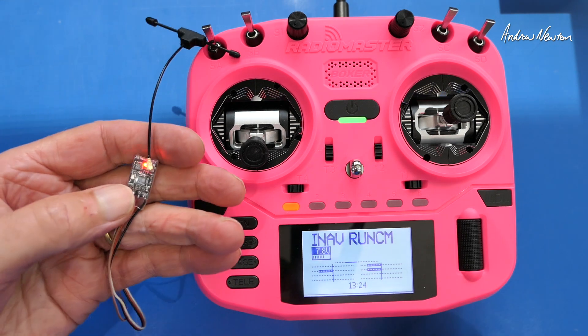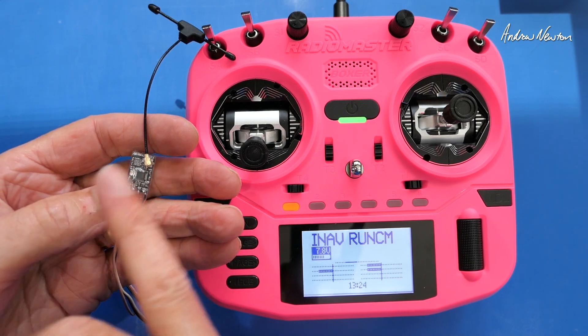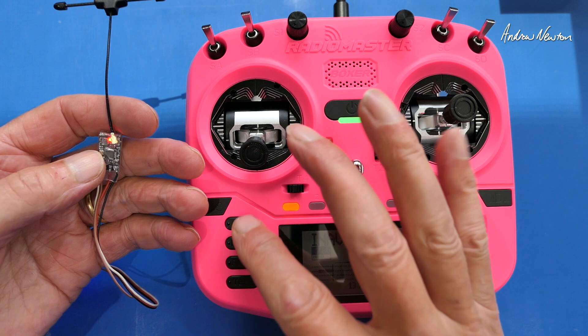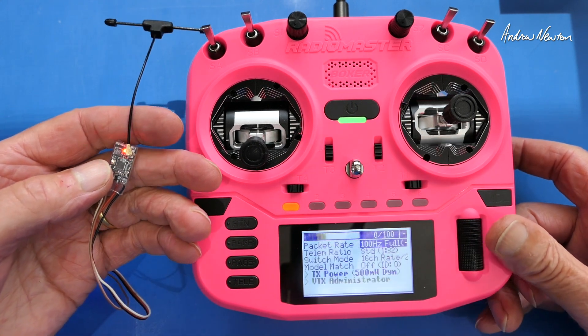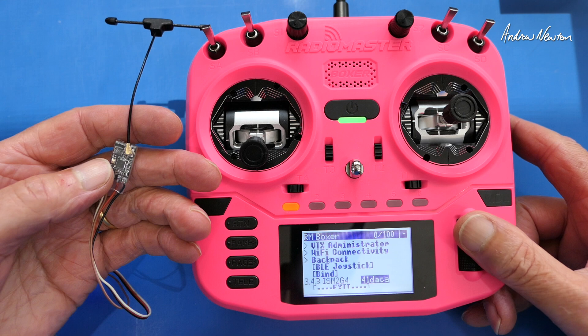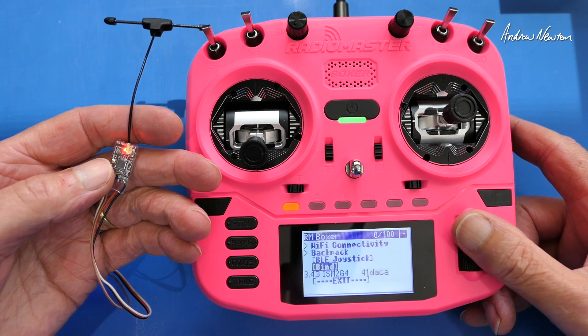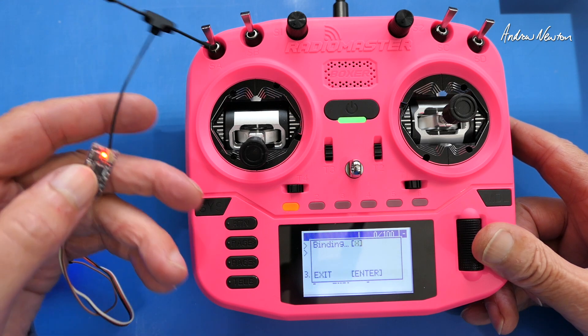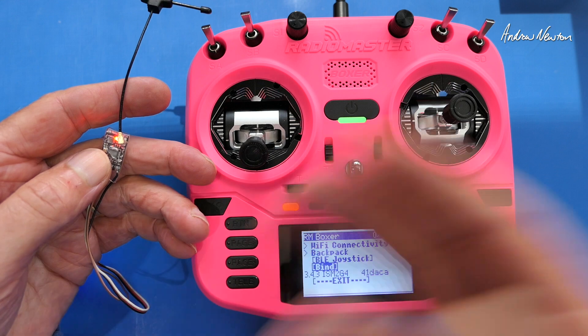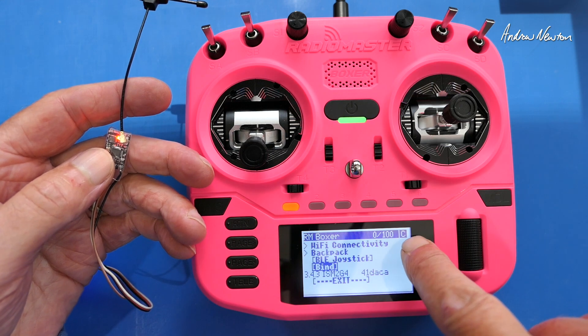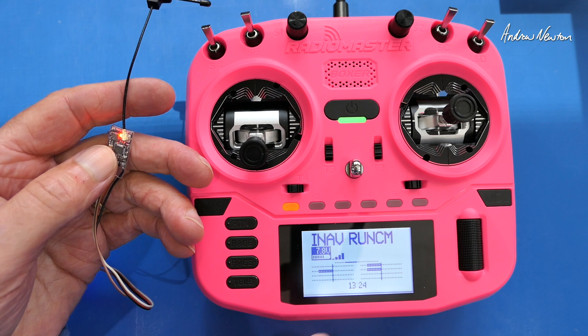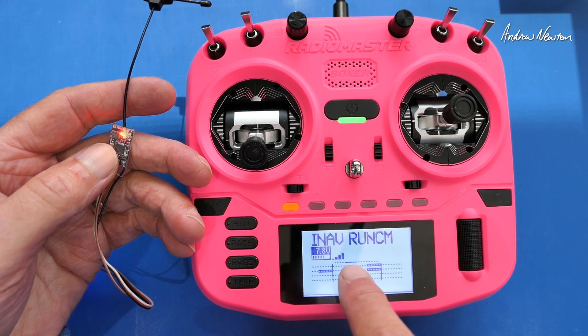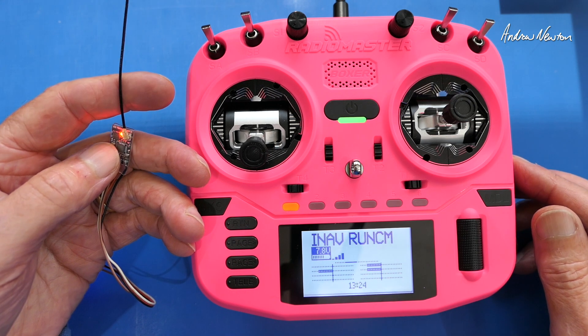So what we'll do now is power it up. So we have double flashing red light. That means it goes straight into binding mode. So let's open up the Lua script. Make sure we've got the latest Lua script there. Bind. And we've got a solid red light. So we are now bound. And we can actually see the little C up in the corner there. So that tells us we're bound. And we've got signal bars on there. So all bound and ready to go.